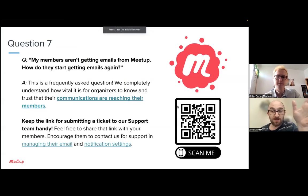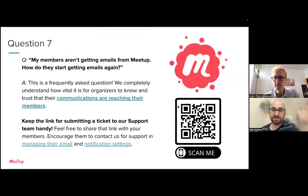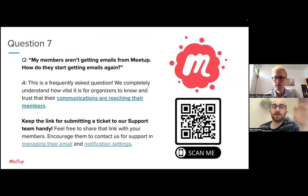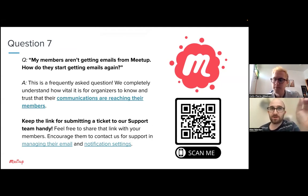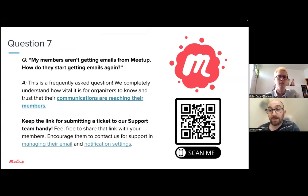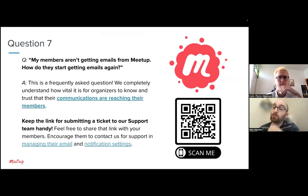The key takeaway: make sure you have a quick and easy link to share with your members if something goes wrong with their emails or anything else in the app. If somebody reports trouble using Meetup and therefore being part of your community, please encourage them to contact community support. That's how we investigate, that's how we improve Meetup, and that's how we make sure everything's working as smoothly as possible for organizers.